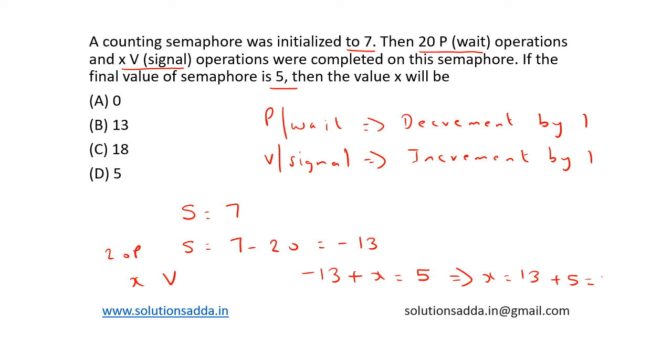So the number of signal operations that are performed is 18, and the correct answer is option C, 18.